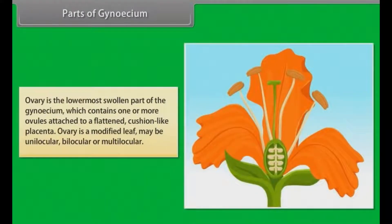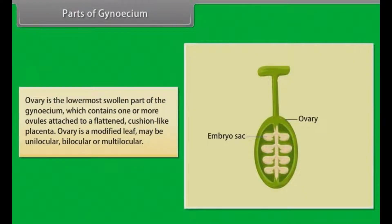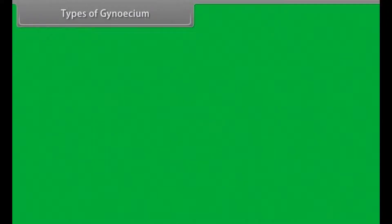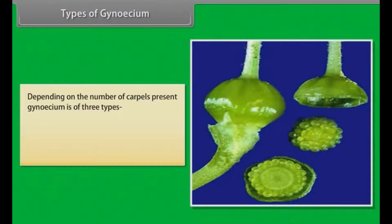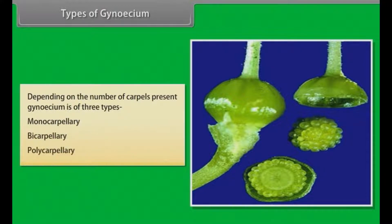Ovary is the lowermost swollen part of the gynoecium which contains one or more ovules attached to a flattened cushion-like placenta. Ovary is a modified leaf and may be unilocular, bilocular or multilocular. Types of gynoecium. Depending on the number of carpels present, gynoecium is of three types: Monocarpellary, Bicarpellary, and Polycarpellary.